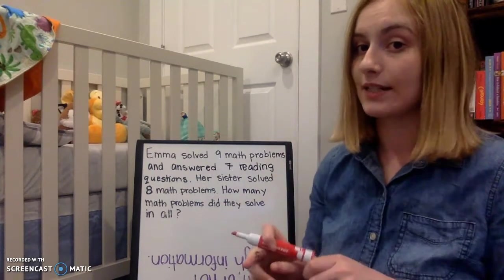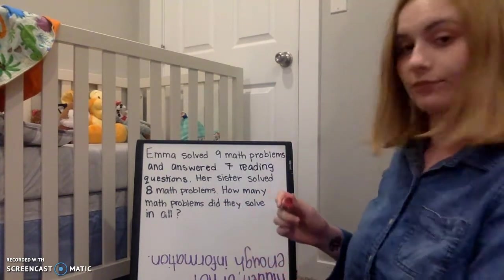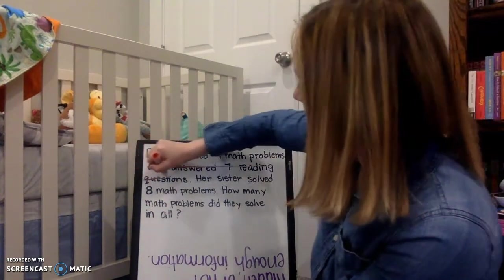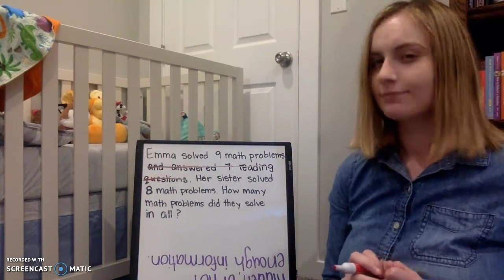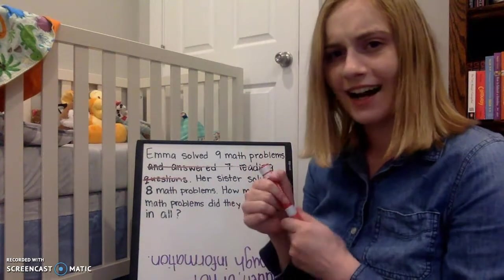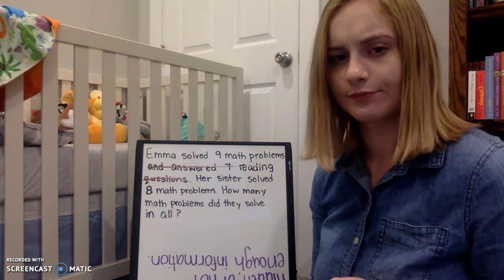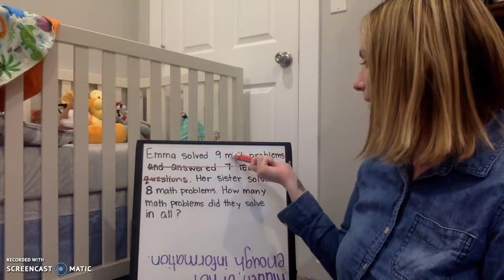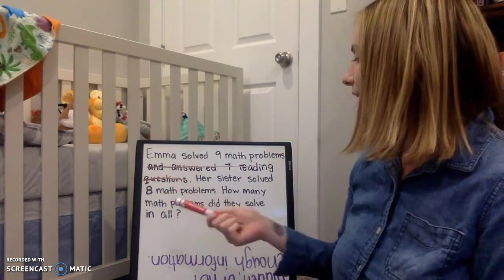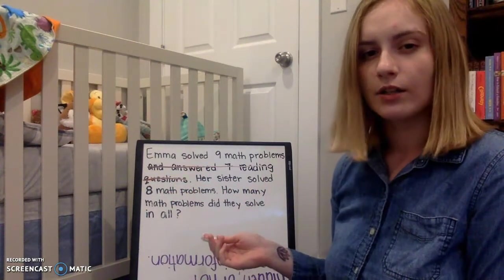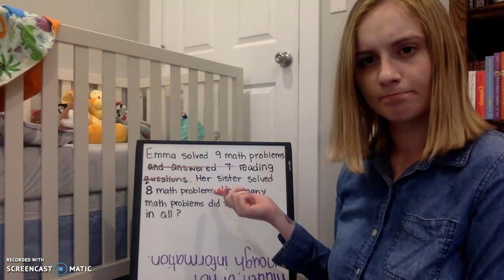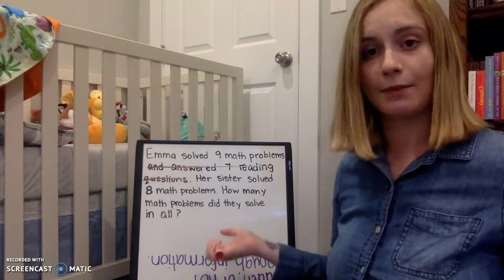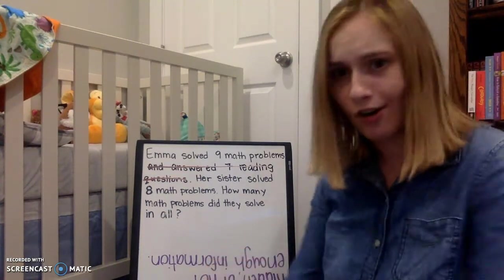I'm going to cross it out — let's see if you had the same idea as me. Did you guys get the same thing? Why is this unnecessary? Why is this extra? This is unnecessary because Emma solved nine math problems and her sister solved eight problems, and we want to know how many math problems they solved in all. Do we even want to know anything about the reading questions? No. The question just says how many math problems did they solve in all, so we don't need the reading questions at all.